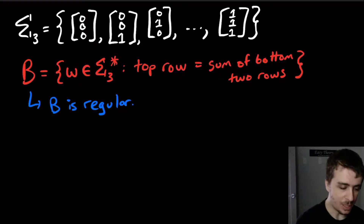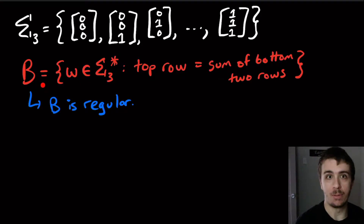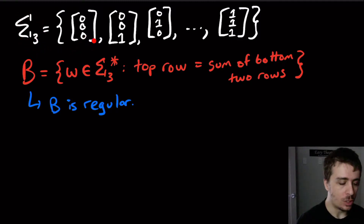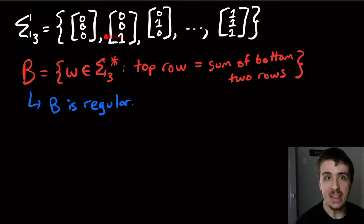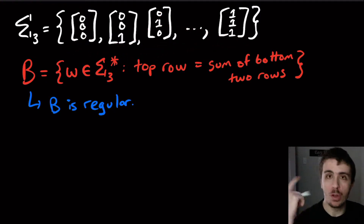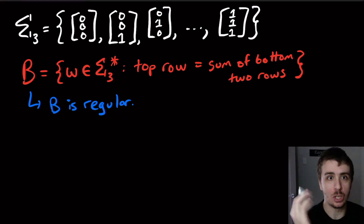Hi, so I have this particular problem from Sipser, which I think is pretty cool. We're going to have a set called sigma3, which is a set that happens to have eight things in it, and we're going to represent that by 000, 001, etc. These really are just characters, but we're going to think of them in a slightly different way.